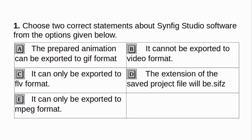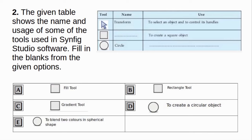Part 2. Choose two correct statements about Synfig Studio software from the options given below. A. The prepared animation can be exported to GIF format. B. It can now be exported to video format. C. It can only be exported to FLV format. D. The extension of the saved project file will be .sifz. E. It can only be exported to MPEG format. Answer: A and D.